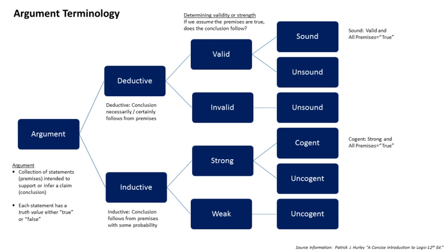The law of syllogism takes two conditional statements and forms a conclusion by combining the hypothesis of one statement with the conclusion of another. General form: P → Q, Q → R, therefore P → R. Example: If Larry is sick, then he will be absent. If Larry is absent, then he will miss his classwork. Therefore, if Larry is sick, then he will miss his classwork. We deduced the final statement by combining the hypothesis of the first statement with the conclusion of the second.